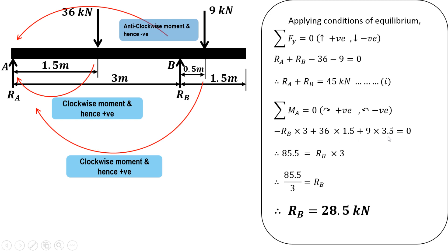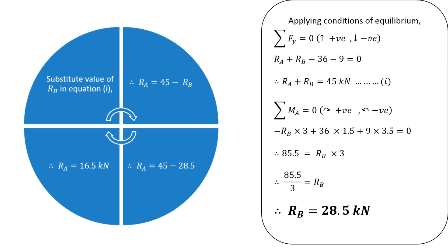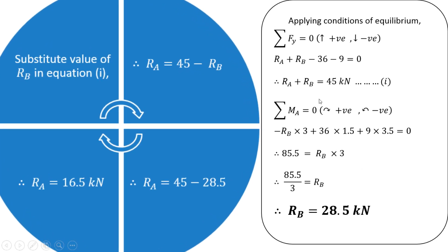Solving the calculations gives 85.5 equal to RB times 3, so RB equals 85.5 divided by 3, which is 28.5 kilonewton. Substituting into equation 1, RA equals 45 minus 28.5, that is 16.5 kilonewton. In this way we can calculate the reactions in case of a simply supported beam carrying uniformly distributed load and a uniformly varying load. Thank you very much for watching.